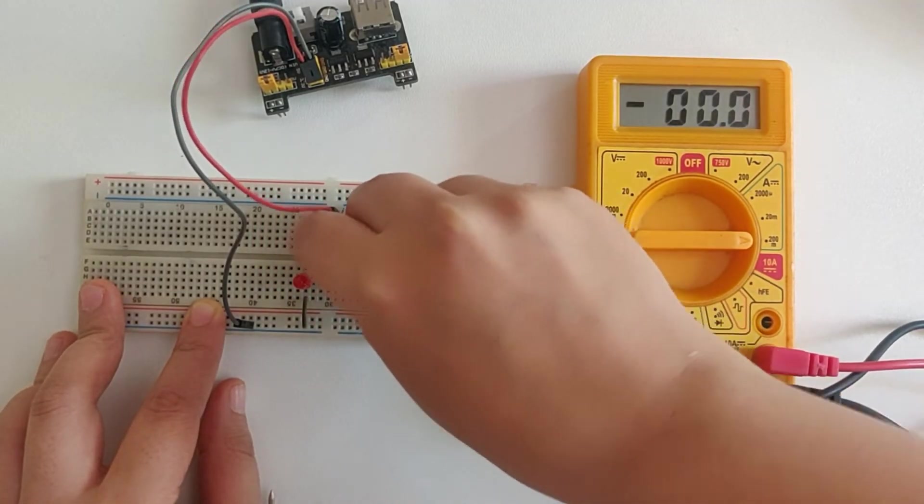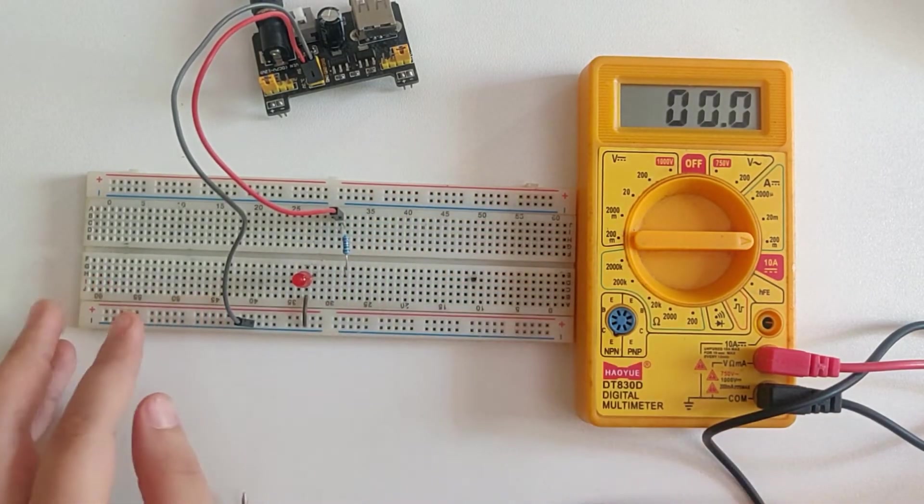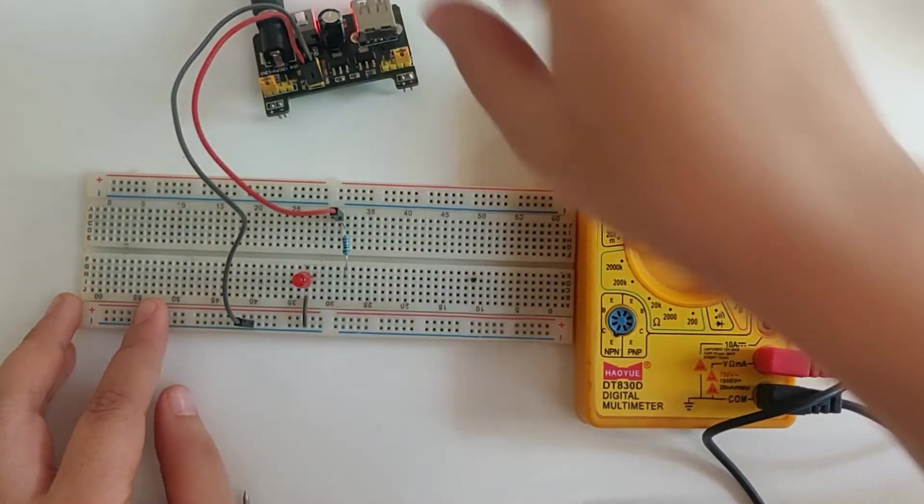Now since we are expecting around 5 milliamperes, I'll lower it down to 20 milliamperes as well to show you a more accurate reading. But I'll start off with the highest available range.